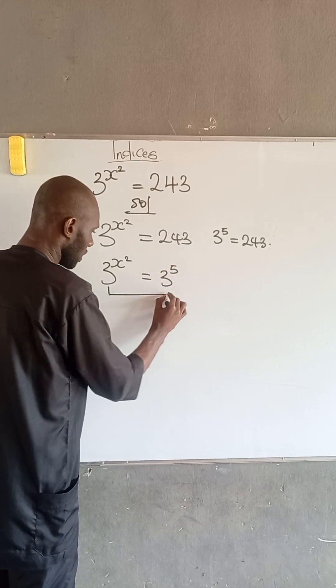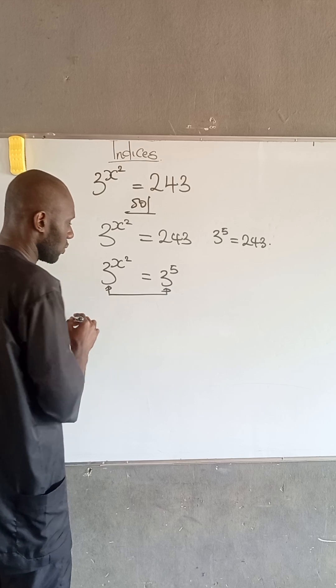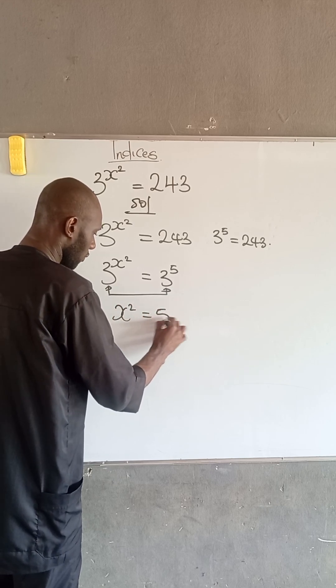At this point, since their bases are the same, we have that x squared is equal to 5.